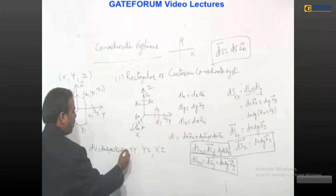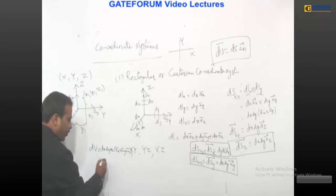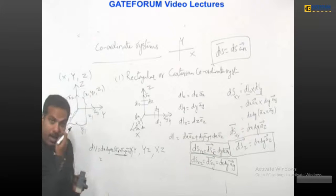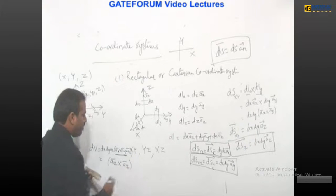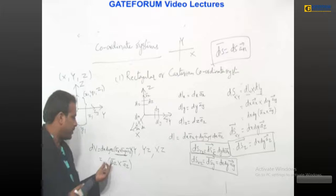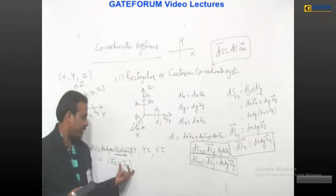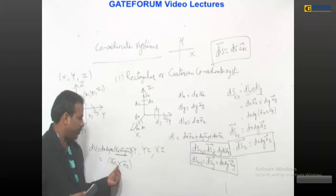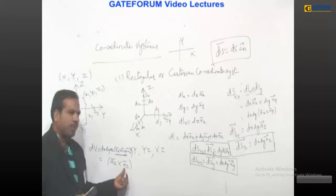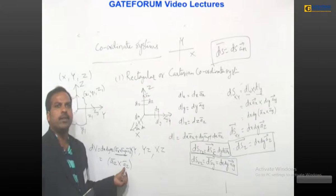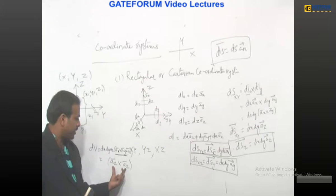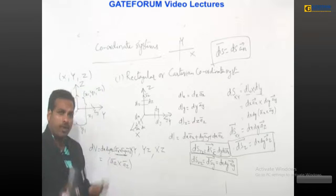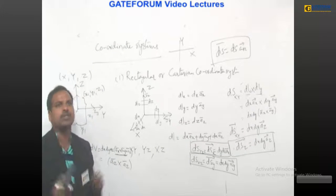We know that ax̄ cross āy becomes āz. So when you consider the cross product between āz and āz, the angle between them is zero, and sin(0) = 0. So the result becomes zero. That is why, when you consider either dot product or cross product, the differential volume comes out as zero.